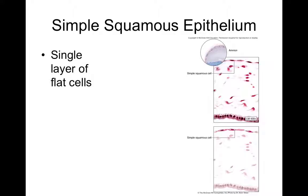Simple squamous epithelium is a single layer of flat, pancake-shaped cells. It would not be very protective, but it would be good at nutrient exchange because it's so thin. You find simple squamous epithelium where rapid nutrient exchange is needed — such as in the alveoli of your lungs, where gases need to move back and forth quickly.